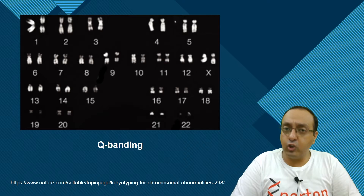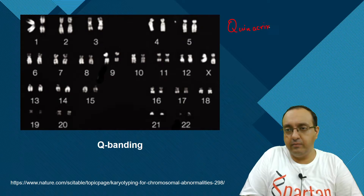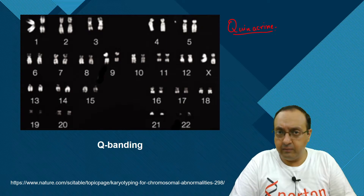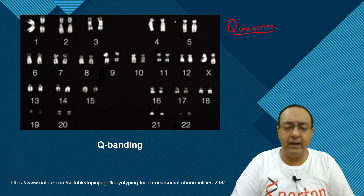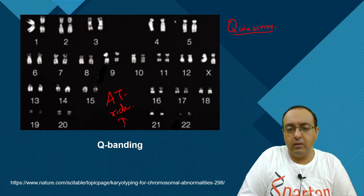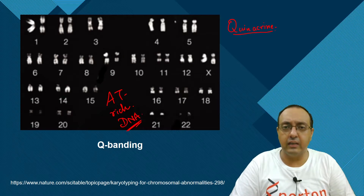Then there was the development of Q-banding, based on the dye quinacrine. It marks the same regions as G-banding. The specific thing about Q-banding is that the dye binds to AT-rich DNA — those are the AT-rich regions where it gives the stain.